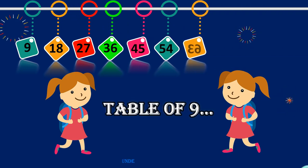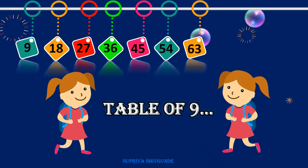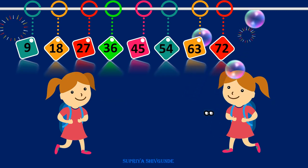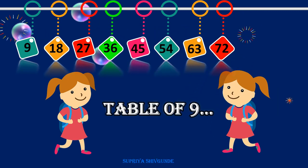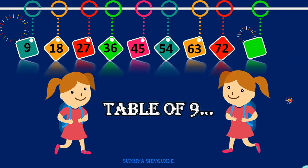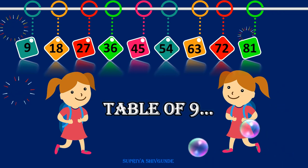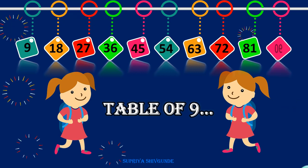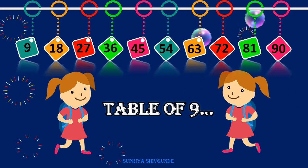Nine sevens are sixty-three. Nine eights are seventy-two. Nine nines are eighty-one. Nine tens are ninety.